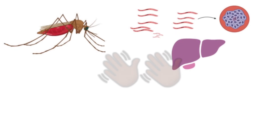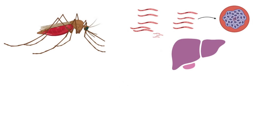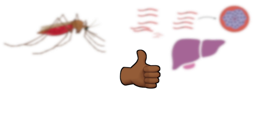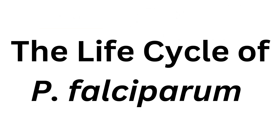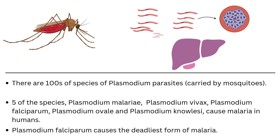Welcome back to Adjoa Biotech, or welcome if this is your first time. Thank you for subscribing and for giving the video a thumbs up whenever it is useful to you. In this video we are looking at the life cycle of the deadliest malaria-causing parasite, Plasmodium falciparum. There are hundreds of species of Plasmodium parasites; five of these are currently known to cause malaria in humans. P. falciparum causes the most deadly form, so we'll zoom in on its life cycle in this video.